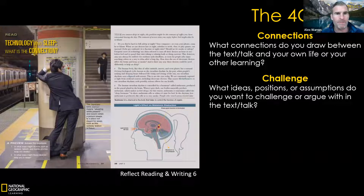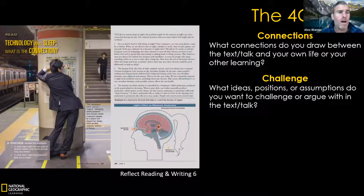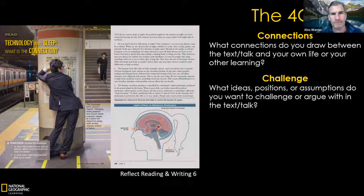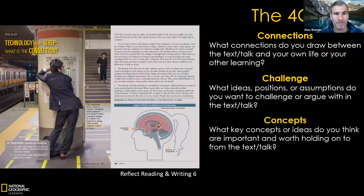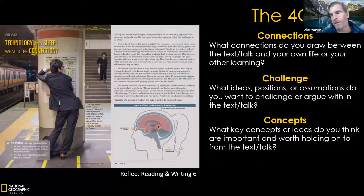The second C is Challenge — we want students to challenge what they read, not accept everything at face value. What ideas or assumptions do you want to argue with in the text? It's okay to disagree. Maybe I disagree with this point because of X, Y, Z — so the group works together to explain why. The third C is Concepts: what do you think is the most important thing worth holding onto from the text? You have to explain why and elaborate, giving reasons — and of course different students have different views, so it becomes a discussion.